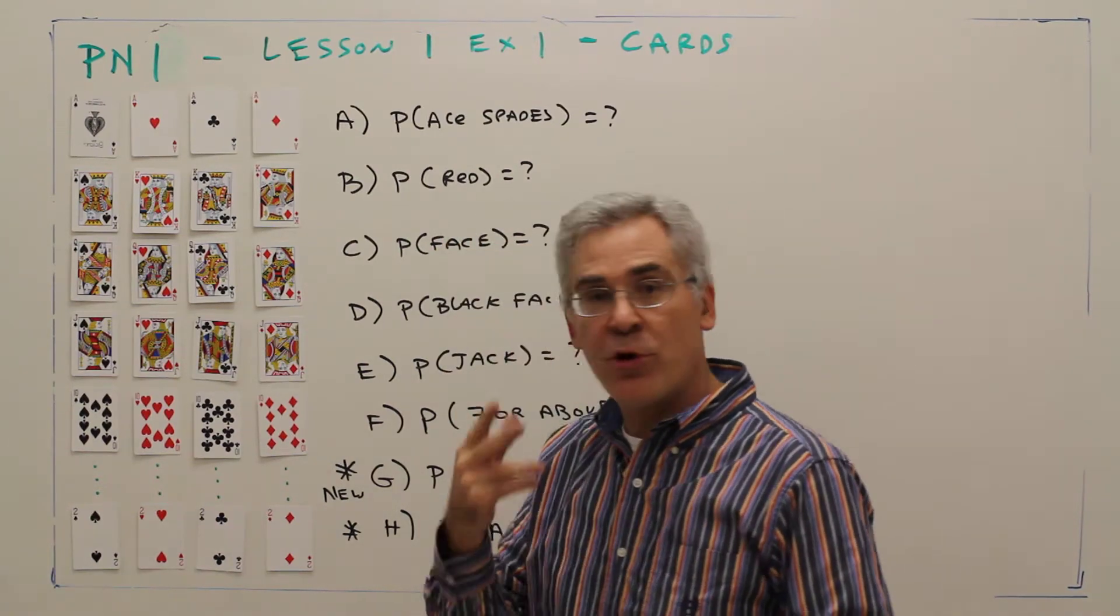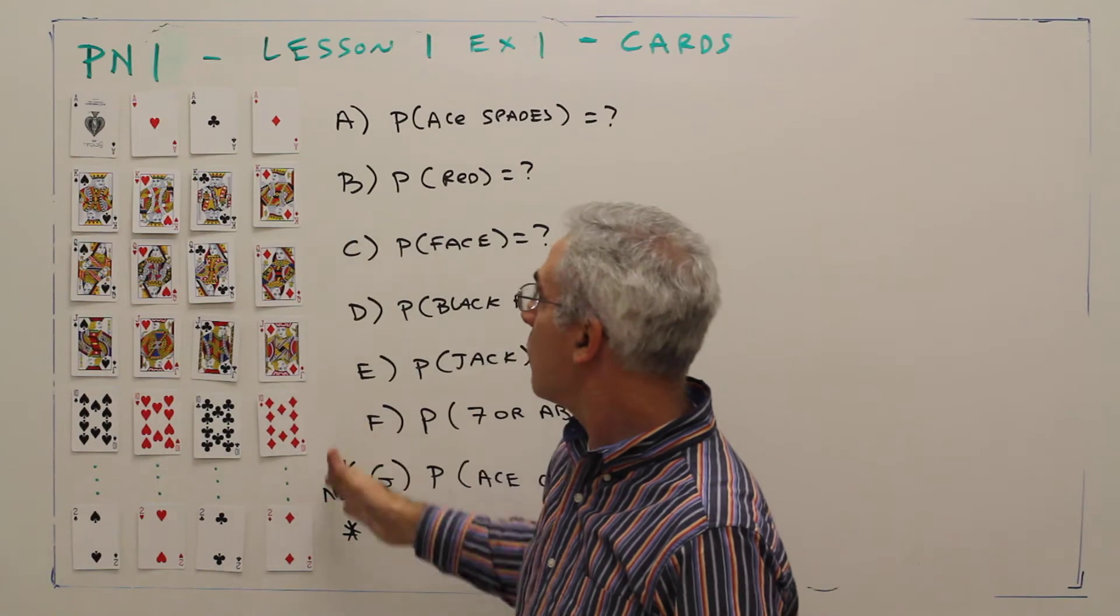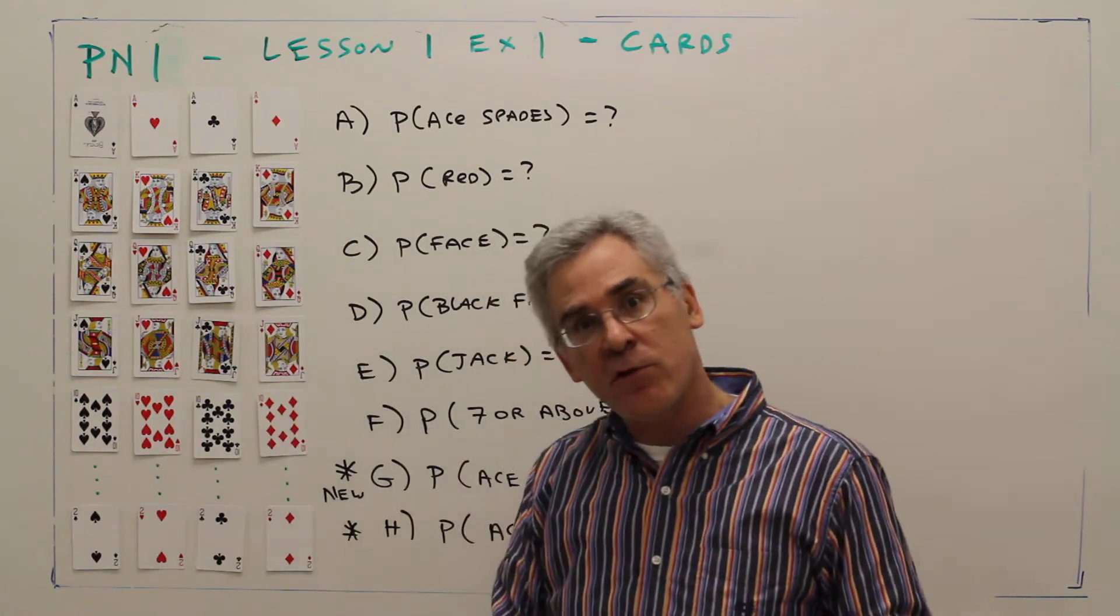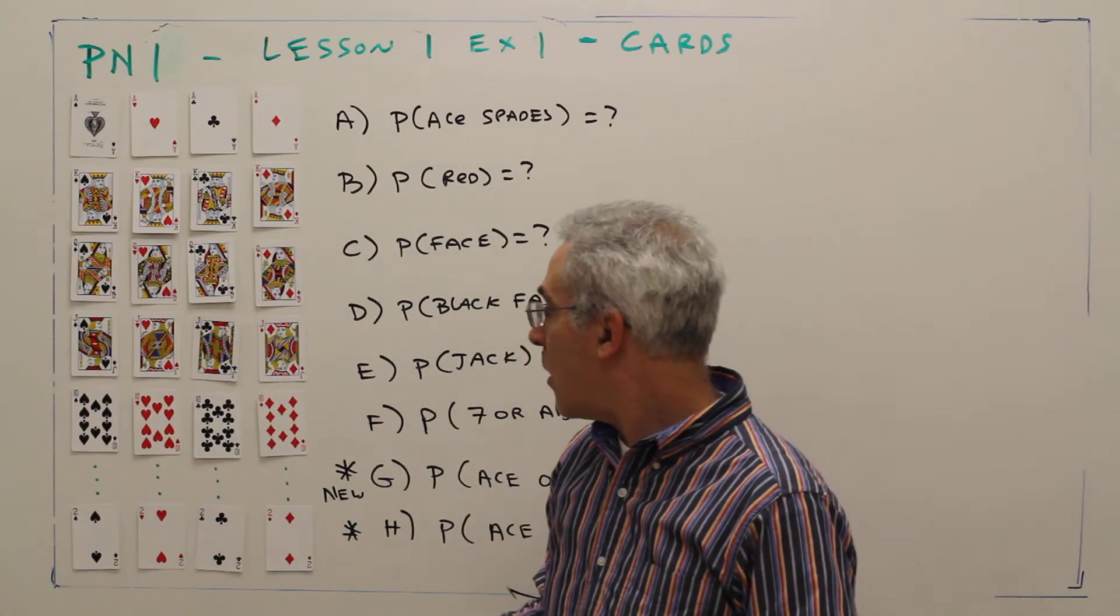There are two different colors: red cards and black cards, so there's 26 of each.